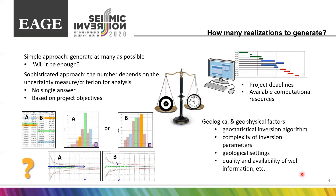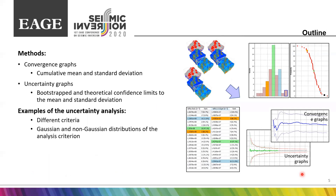Unfortunately, in reality, the degrees of freedom affecting the answer are so many that it cannot be done in advance. But what we can do is adjust the number during the project — meaning that after generating a few realizations, we can make predictions of how many more need to be calculated to achieve the required level of uncertainty. In this presentation, we will analyze different methods to obtain an estimate of the minimal number of realizations required to achieve a certain level of accuracy.